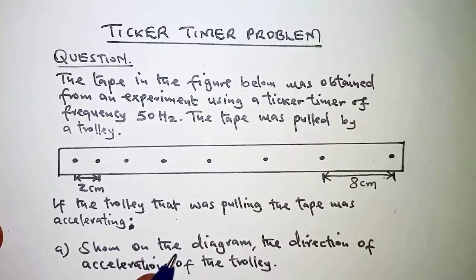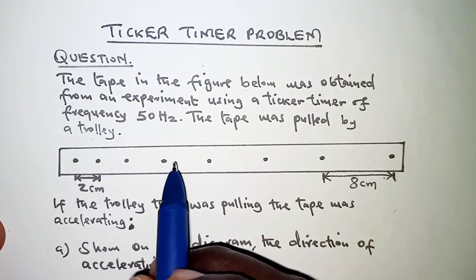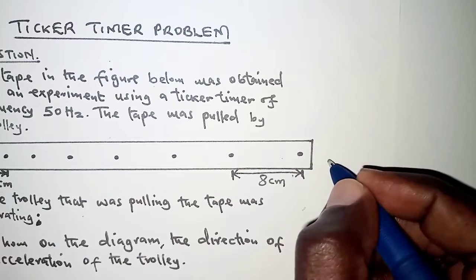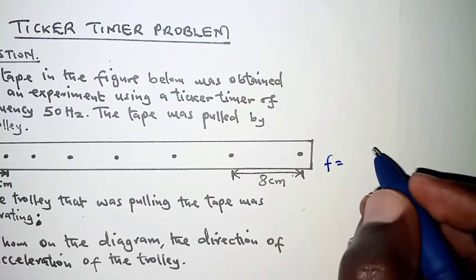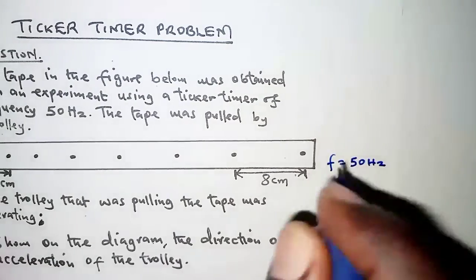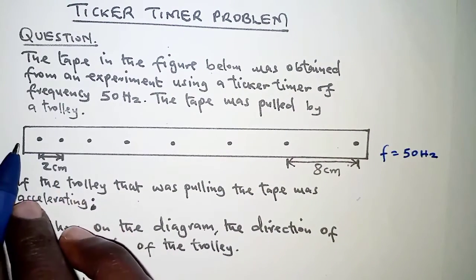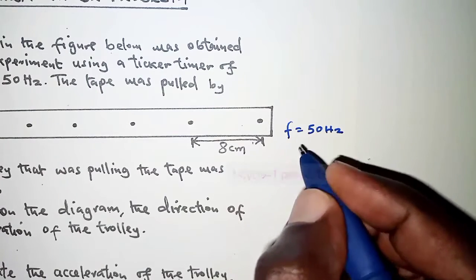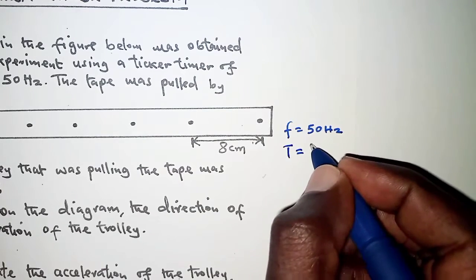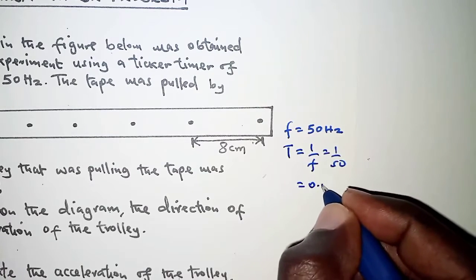The first thing we need to note is that for each interval the time is the same. We're told that the frequency of the ticker timer is 50 hertz. Each interval here represents one complete cycle, so from this frequency we can determine the time for one complete cycle, which is 1 over the frequency — 1 over 50 — and that is 0.02 seconds.